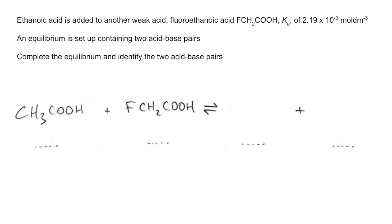The first thing we need to do is get those Ka values in. That's going to tell us which of those two weak acids is the stronger of the two and therefore going to donate its proton. The largest Ka value is this one here. So this fluoroethanoic acid is going to donate this H plus ion to the ethanoic acid, becoming that, and the ethanoic acid is going to become that.